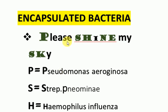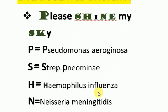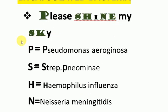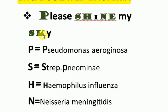To memorize the names of the encapsulated bacteria, there is a mnemonic: 'Please Shine My Sky.' The letters shown in capital and in green color denote the names of the encapsulated bacteria — P for Pseudomonas aeruginosa, S for Streptococcus pneumoniae, H for Haemophilus influenzae, N for Neisseria, E for E. coli, S for Salmonella, and K for Klebsiella.